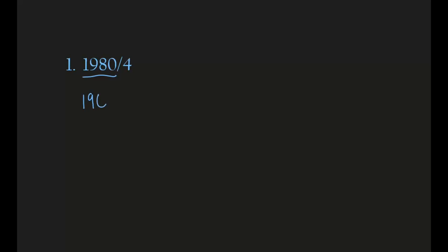Our first problem is 1,980 divided by 4. Before we start doing the problem, we are going to round this number to its nearest hundreds. One option is obviously 1,900, but we need to look for other numbers close to this. The next option could be 2,000, because that's the next hundreds place after 1,900.